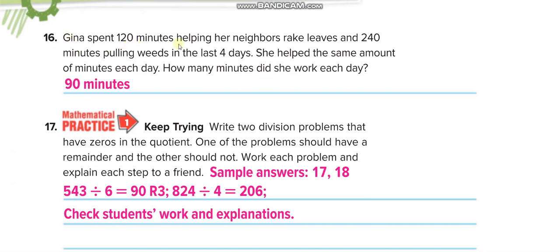Gina spent 120 minutes helping her neighbor rake leaves and 240 minutes pulling weeds in the last four days. She helped the same amount of minutes each day. So what you have to do guys, 120 plus 240 equals 360, and then 360 divided by 4 equals 90.